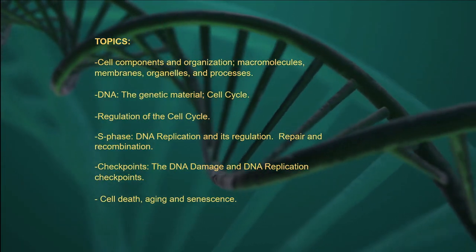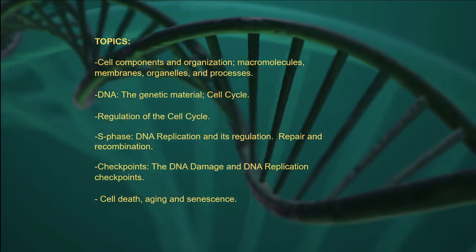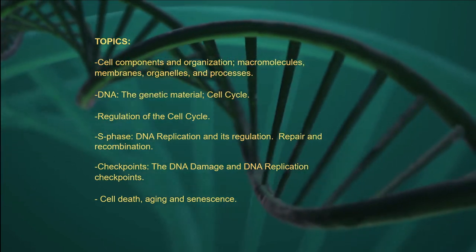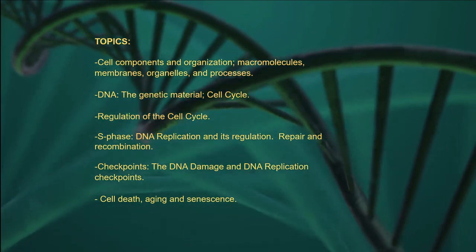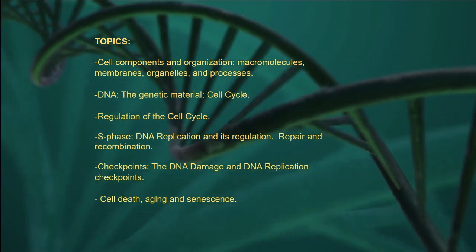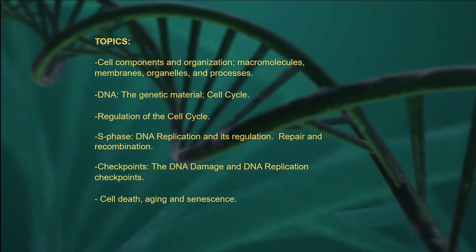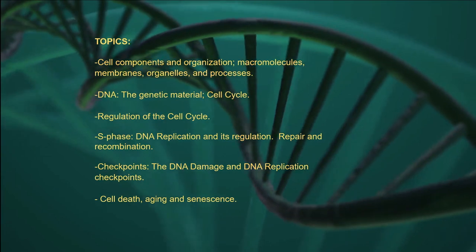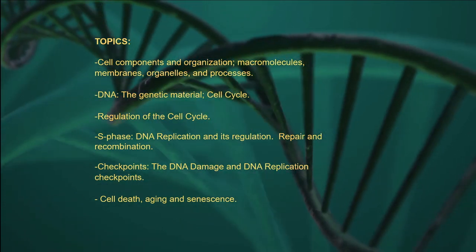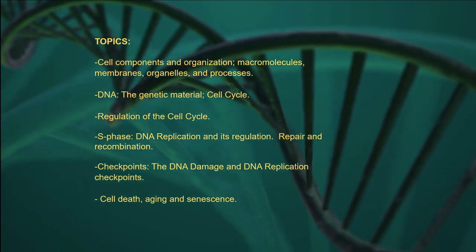You will learn about the basics of cell components and organization, how various macromolecules come together to form intracellular structures that carry out life's processes. You will learn about DNA, deoxyribonucleic acid, that is the genetic material, how it is organized in the cell and how this organization affects its various functions. We will discuss how DNA is replicated and segregated into progeny cells during cell division via an ordered sequence of events termed the cell cycle.